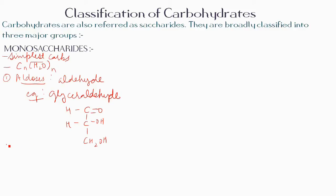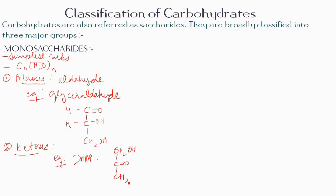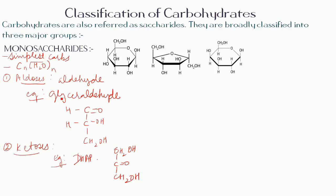The second category is ketoses. When the functional group is a keto group, the monosaccharide is called a ketose. An example is dihydroxyacetone phosphate, which is found in cells as a phosphate and serves as an intermediate in glycolysis. Some simple monosaccharides include glucose, fructose, and galactose.